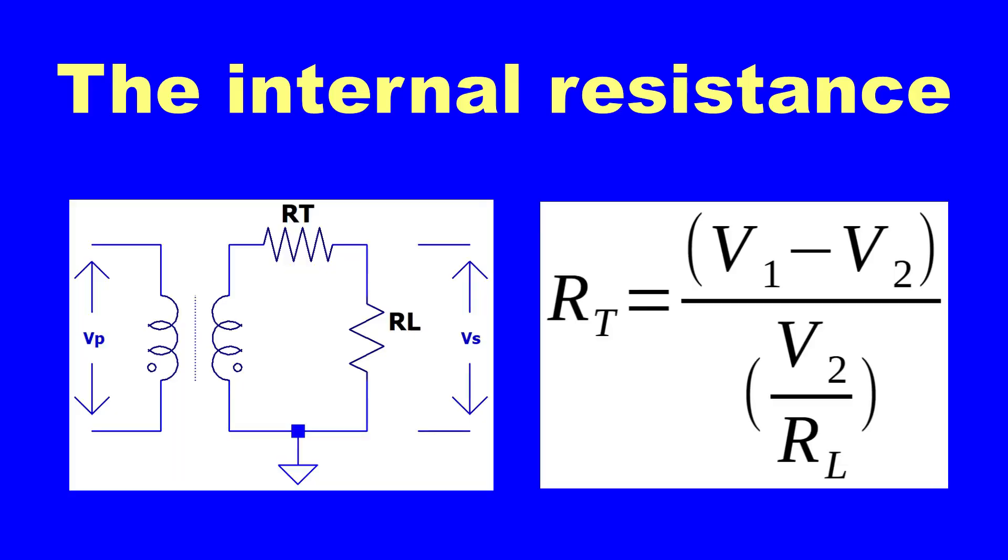Now we calculate the transformer's internal resistance by measuring the voltage drops across different resistive loads. The measurements are taken by recording the value of the connected load, the transformer's no-load voltage, and the voltage under load.